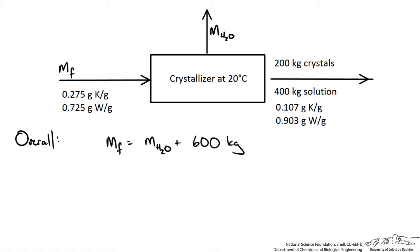Now if I was to do a water balance, we have 0.725, our weight fraction, times our flow rate in, has to be equal to the mass flow rate of the water leaving, plus, and we don't take any water from our crystals, but from our solution, it's 0.903 times 400.